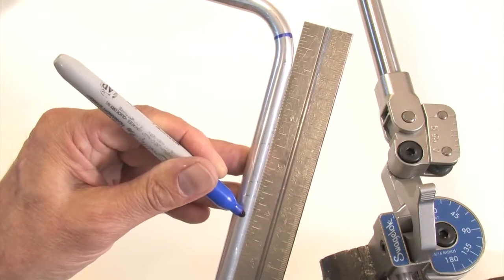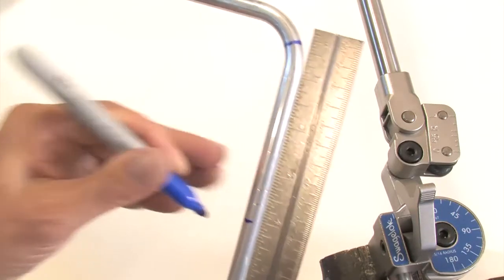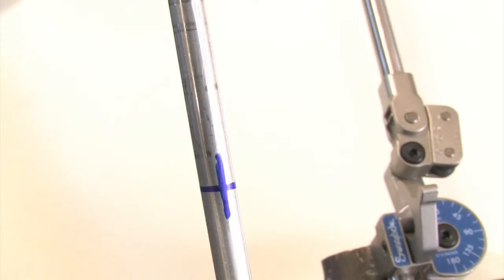Mark the second bend four inches from the center line of the first leg. Make a directional mark to indicate the outside or heel of the bend. This will help you make the bend in the right direction.